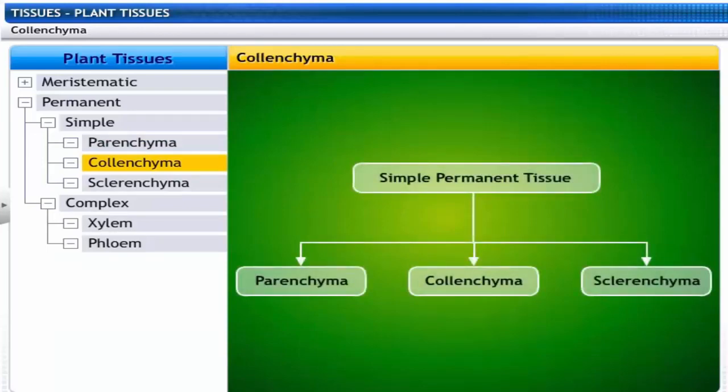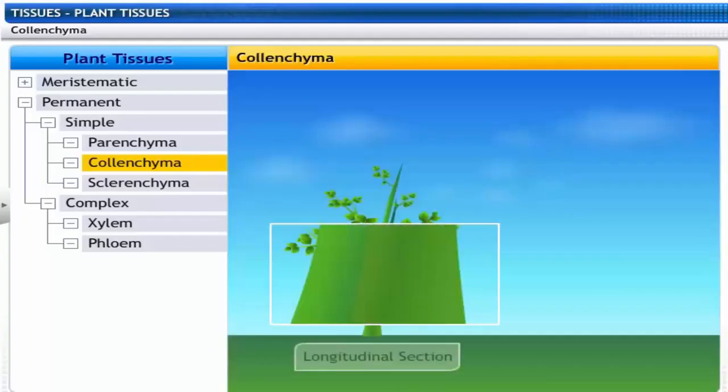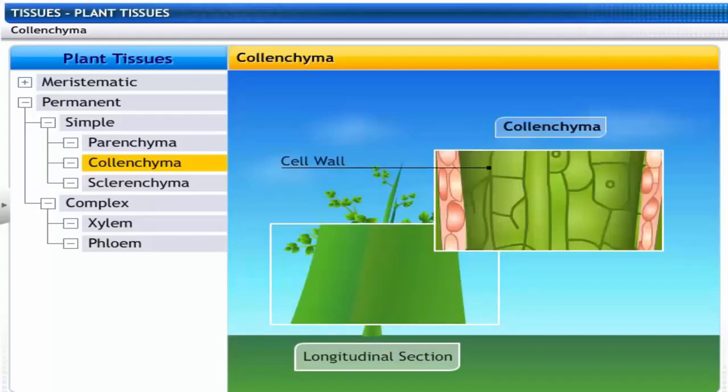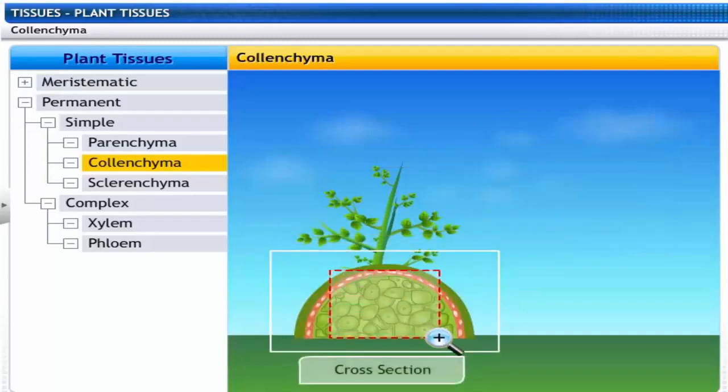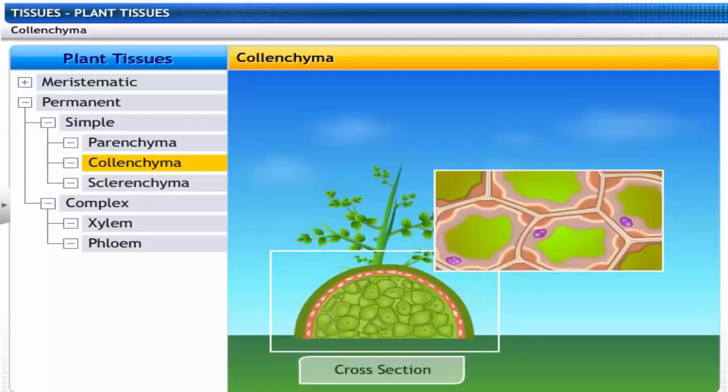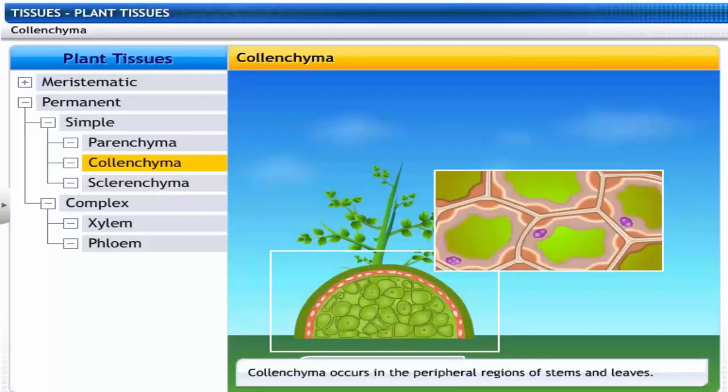Let's take a look at another simple permanent tissue, the collenchyma. Collenchyma are elongated living cells with cell walls made of cellulose and pectin. These cells have little intercellular spaces. They occur in the peripheral regions of stems and leaves.